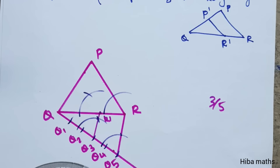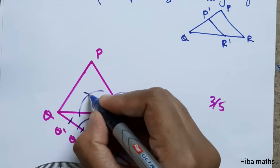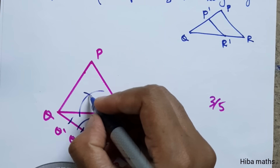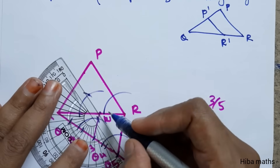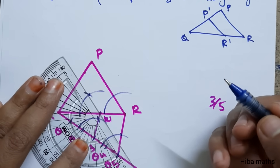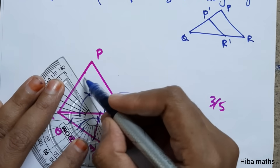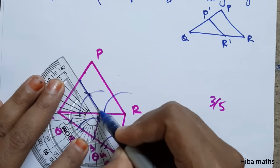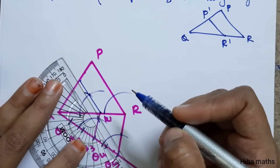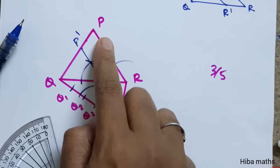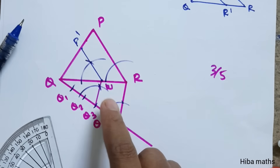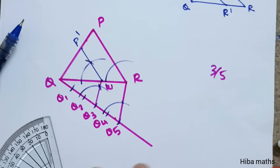Now we connect the point R' to the corresponding point. Here is triangle PQR with points P' and R' marked. We copy the diagram from the book to complete the construction.